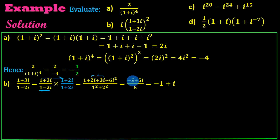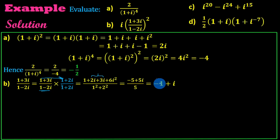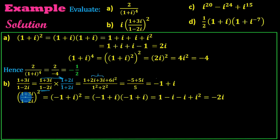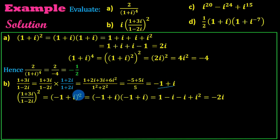So the numerator divided by five: minus five over five is minus one, plus five over five is i. So 1 plus 3i over 1 minus 2i simplifies to minus one plus i. Now we need the whole square, so minus one plus i the whole square.